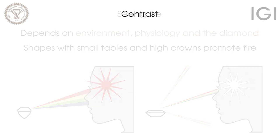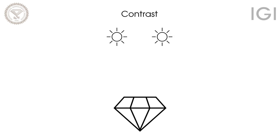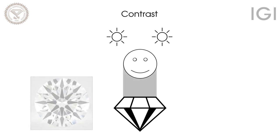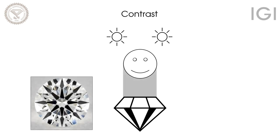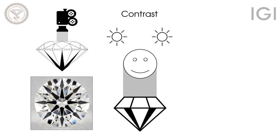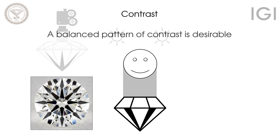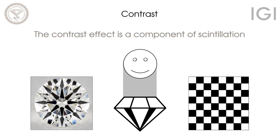That brings us to contrast. Some light from above will always be blocked by the viewer, creating dark patterns. You can see the contrast effect in diamond photos because the camera blocks light the same way a viewer does. A balance of contrast is desirable since the on and off contrast effect when diamonds move is a dramatic component of scintillation.